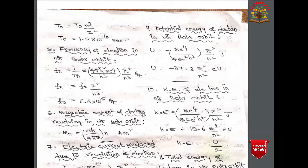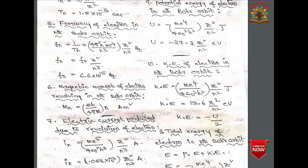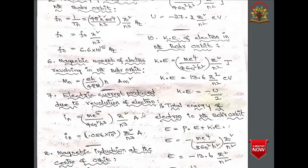The frequency of an electron in the nth Bohr orbit is f_n = 1/T_n = 4π²k²me⁴/h³ × Z²/n³, or f_n = f₀ × Z²/n³, where f₀ = 6.6 × 10¹⁵ Hz.